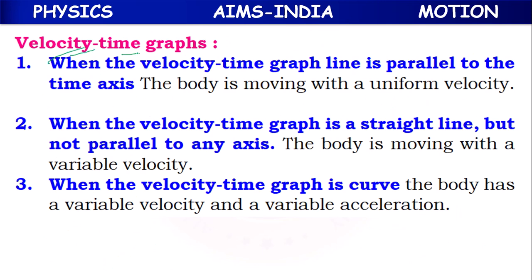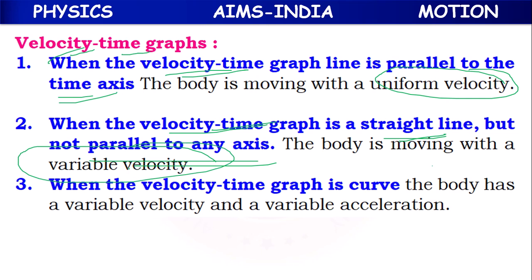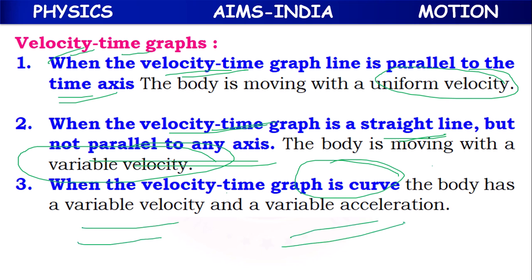For velocity-time graphs: when the graph is parallel to the time axis, the body is moving with uniform velocity. When the graph is a straight line but not parallel to any axis, the body is moving with variable velocity. When the graph is a curve, the body is moving with variable velocity and variable acceleration.